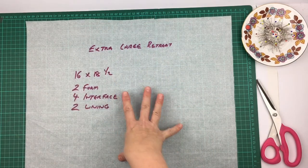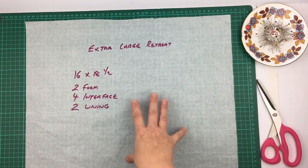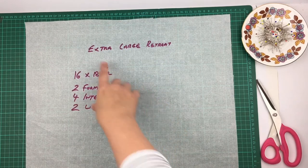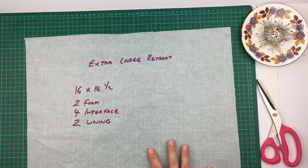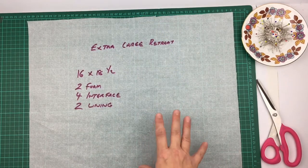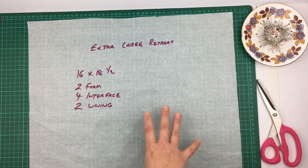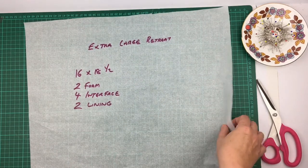I've created a pattern piece for the interface and the lining. The interface and the lining will measure the same distance across the top, which is 18 and a half, but the length is now 16, and you need to cut two foam, four woven interface, and two of your linings.